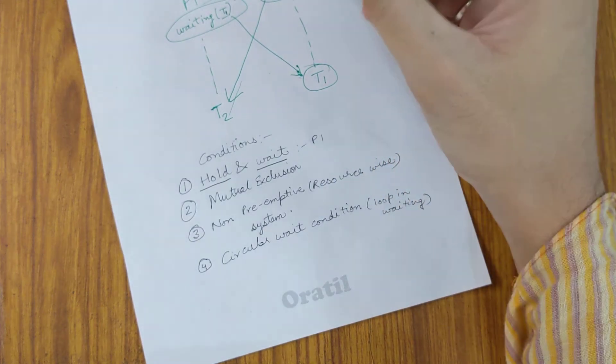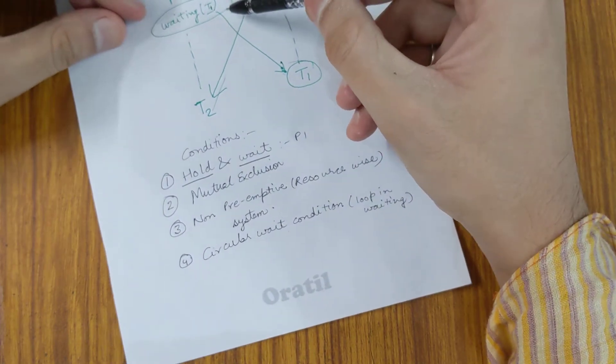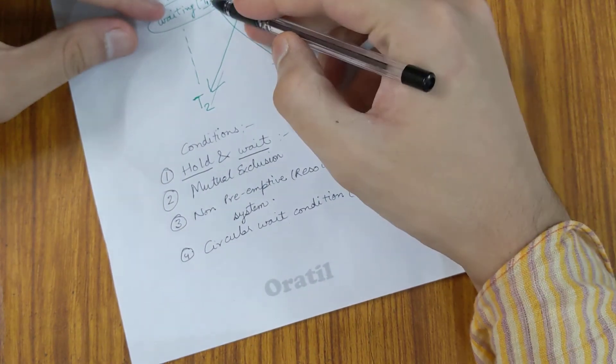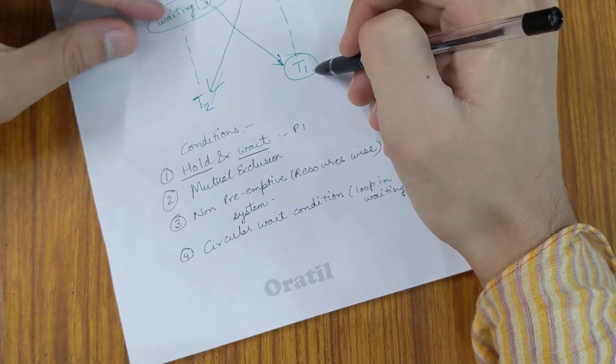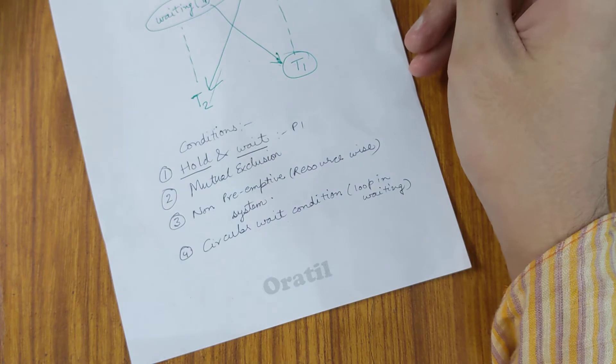Hello friends, we have already seen what a deadlock is. It's the condition which occurs when there is a process waiting on a resource that is held by some other process, and vice versa. There are four conditions for deadlock to occur.